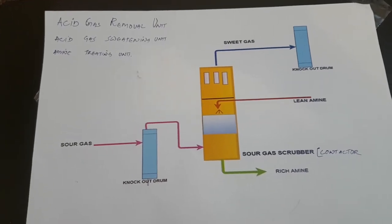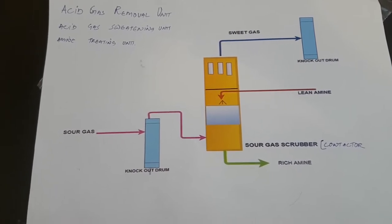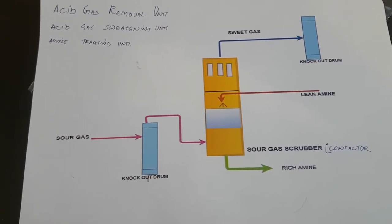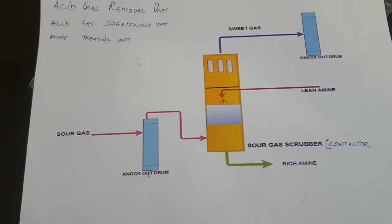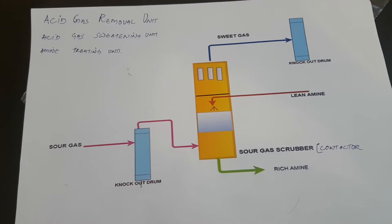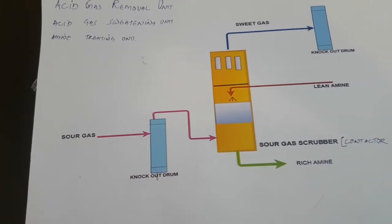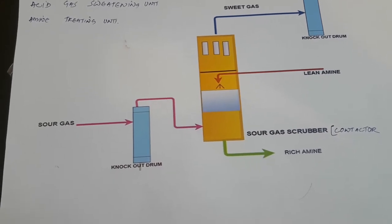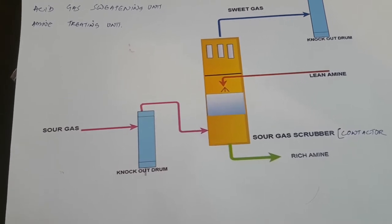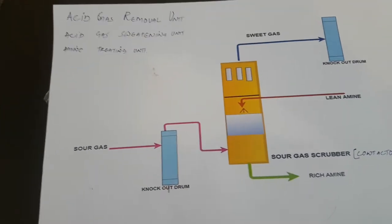Hello guys, good morning, welcome to my channel Chemical Dairy. In this video I'm going to teach you about a mine treating unit, which is also known as acid gas sweetening unit or acid gas removal unit. This unit is one of the important units in petrochemical and petroleum refining industries for the removal of hydrogen sulfide. Hydrogen sulfide is present in hydrotreated kerosene, hydrotreated diesel, hydrotreated naphtha, and also in natural gas. It is important to remove hydrogen sulfide because this compound is very corrosive and very bad for equipment and the environment.